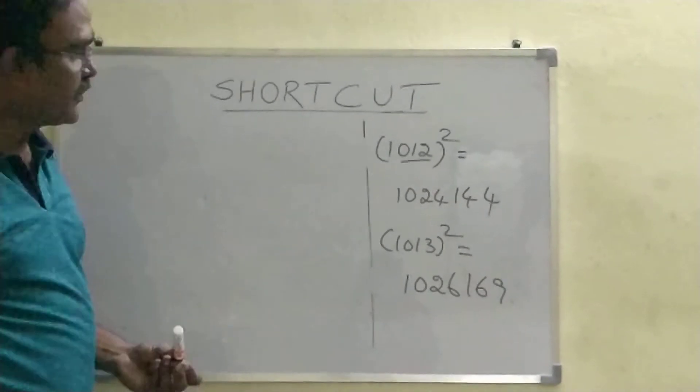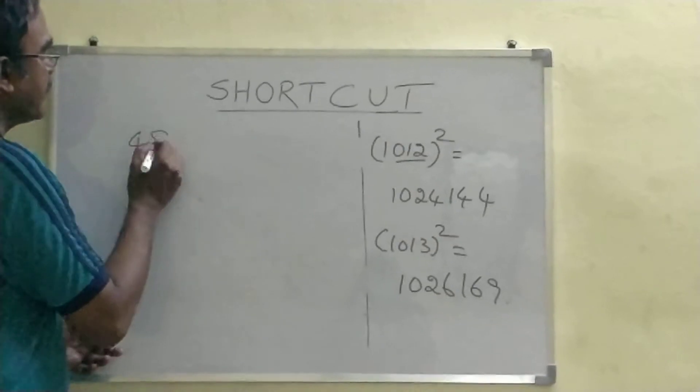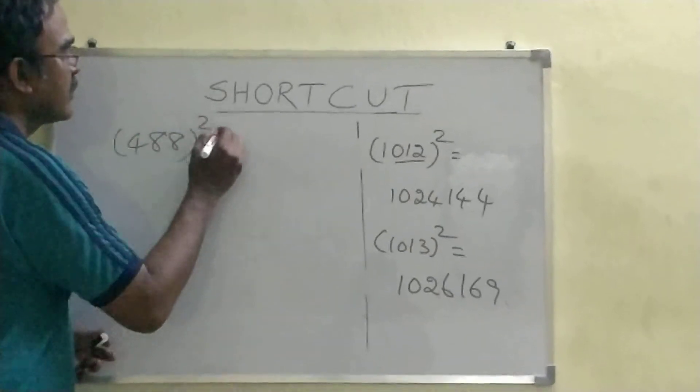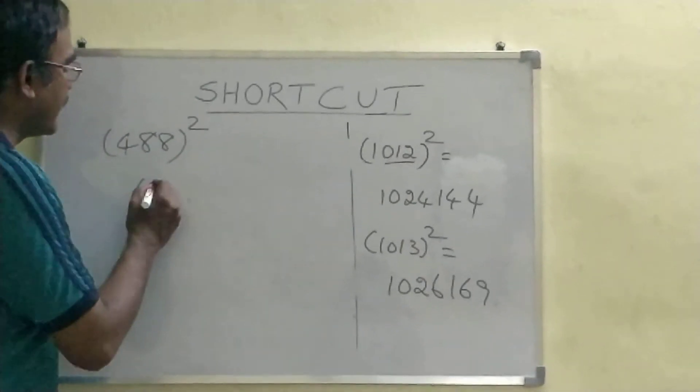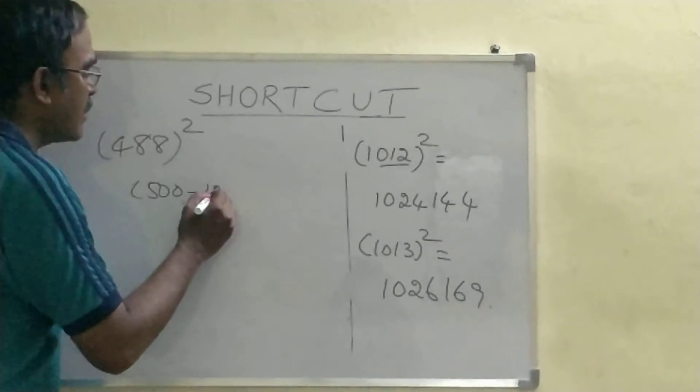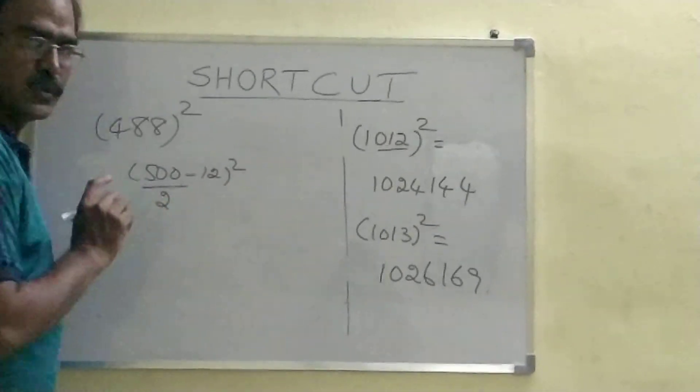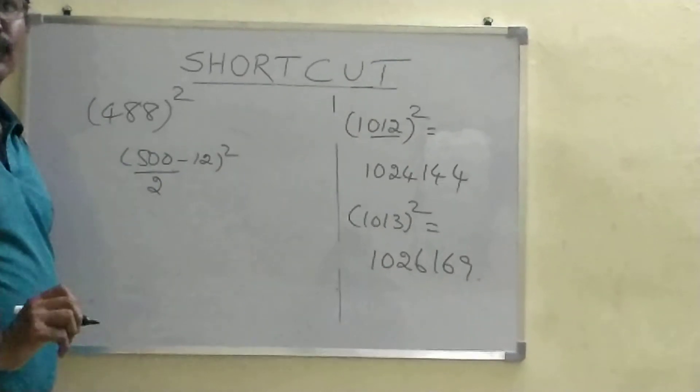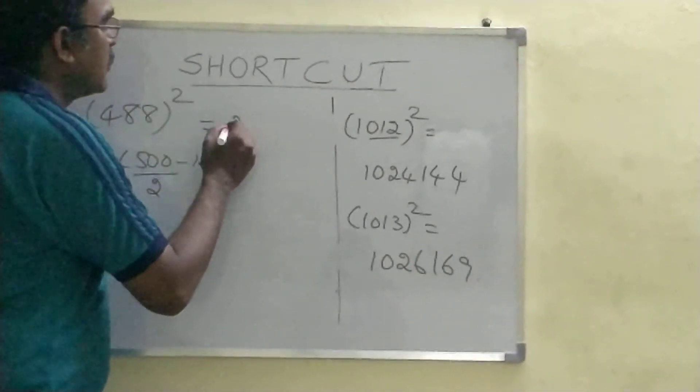Let's solve this question also. So, 488 whole square. How to do this? This is 500 minus 12 whole square. 500 divided by 2, 250. 250 minus 12, 238. So, 238.